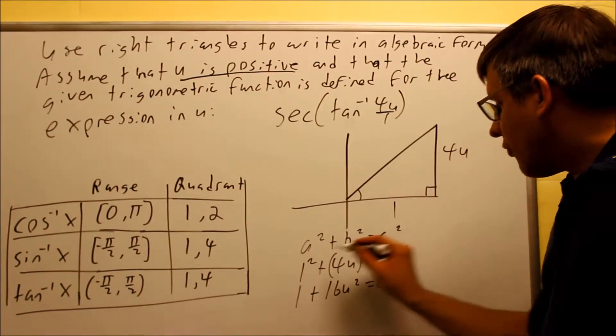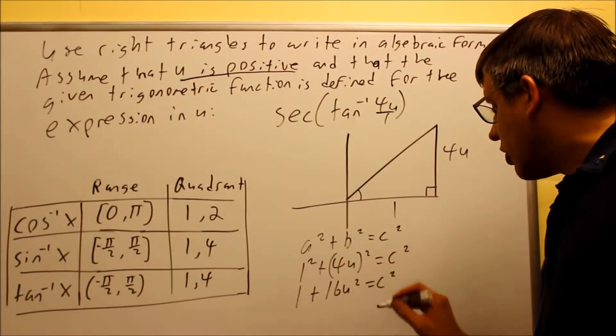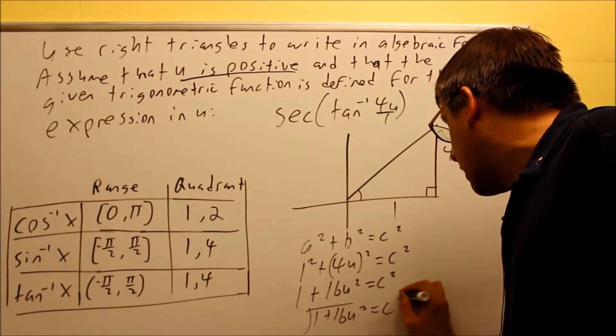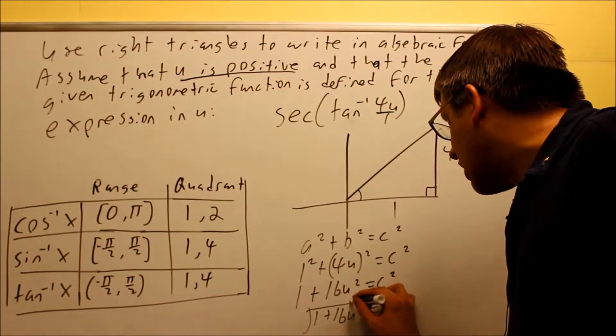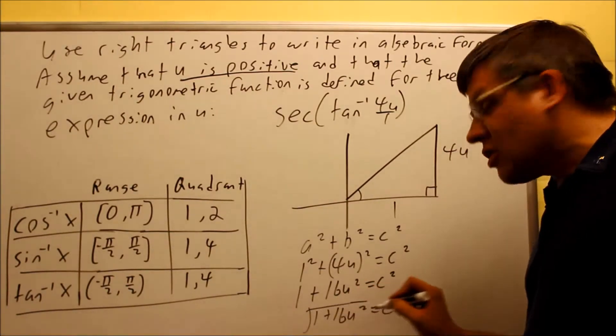And we have to find the hypotenuse by taking the square root of both sides. So when I take the square root of both sides, I get square root of 1 plus 16U squared. That's equal to C because I took the square root of both sides. You're not allowed to square root each of these individually.